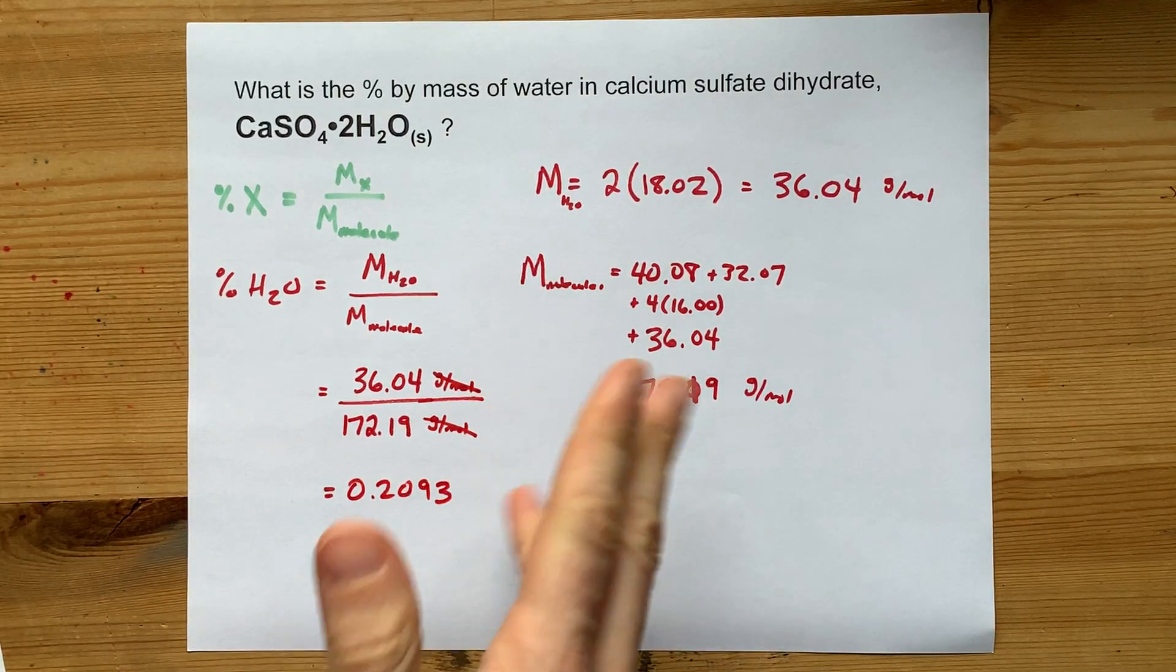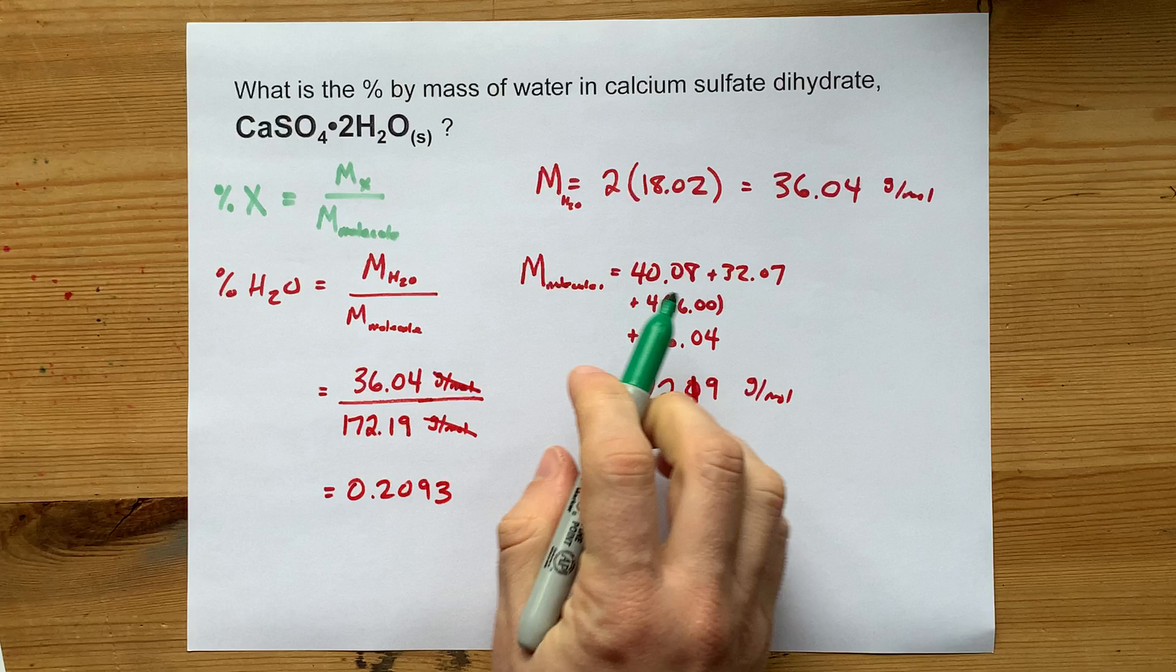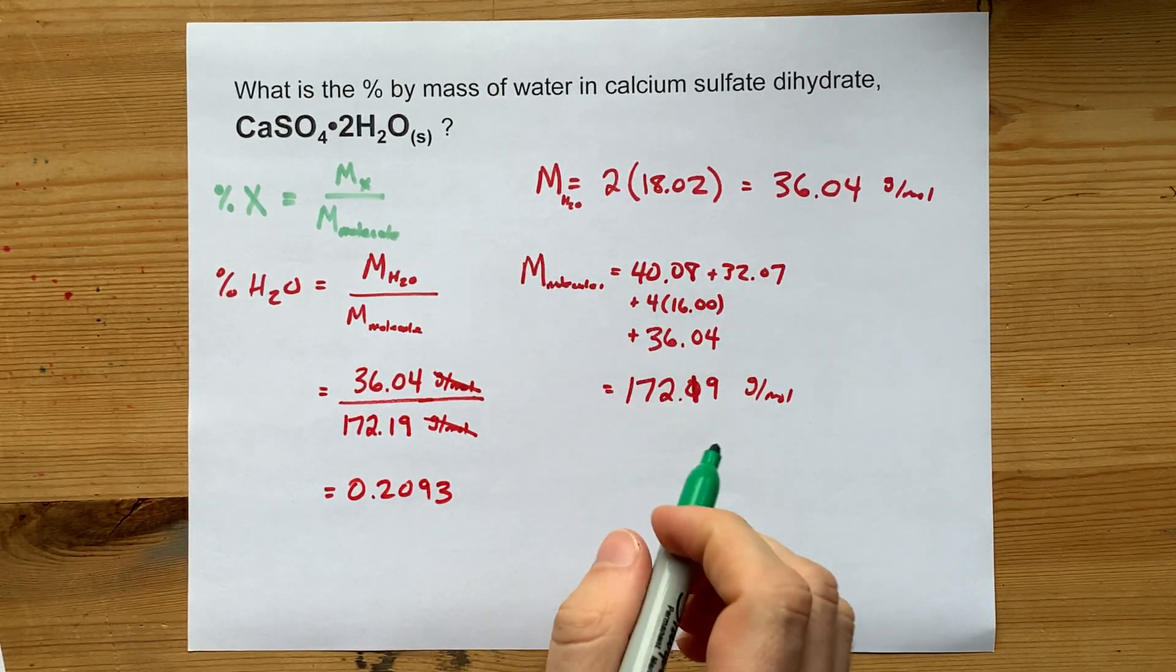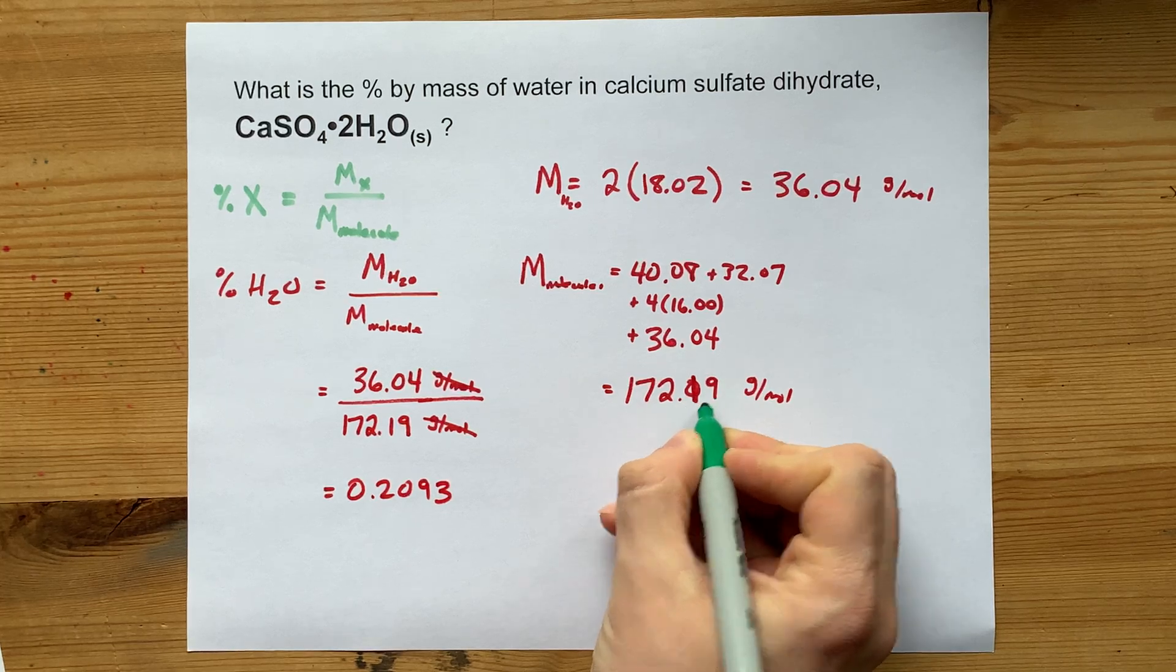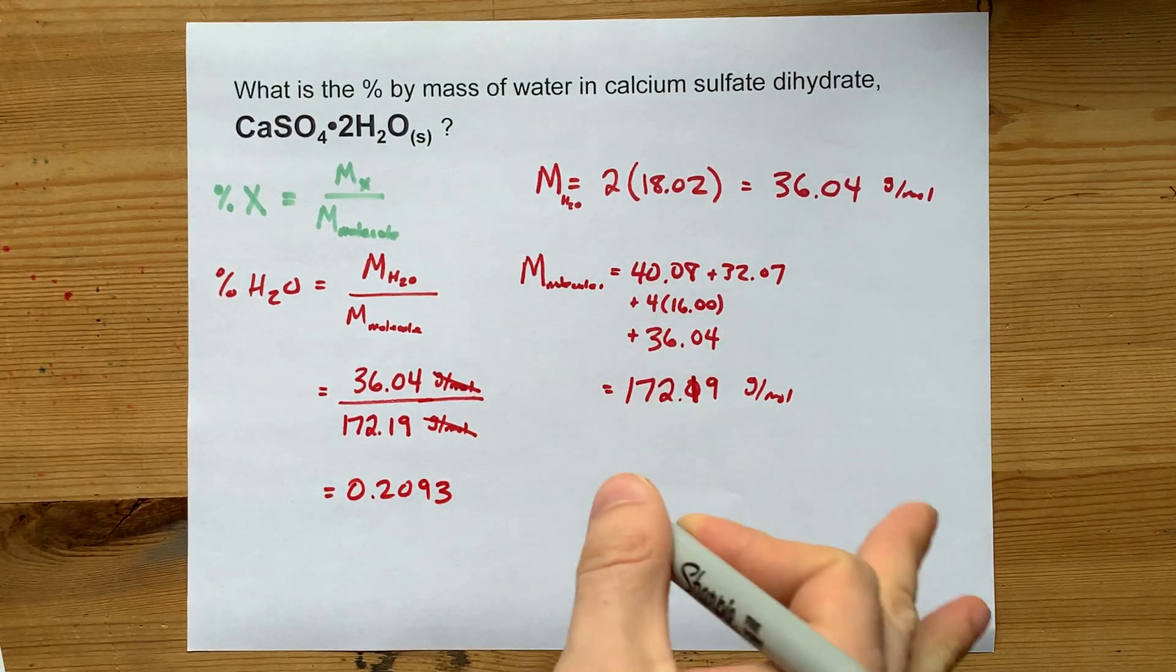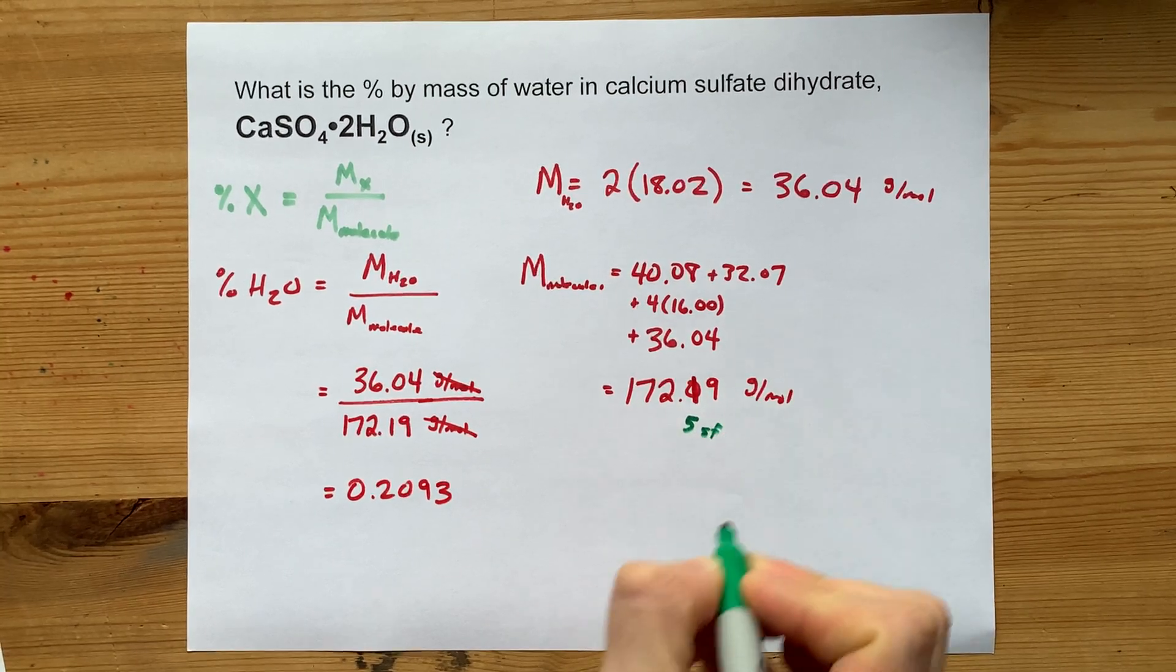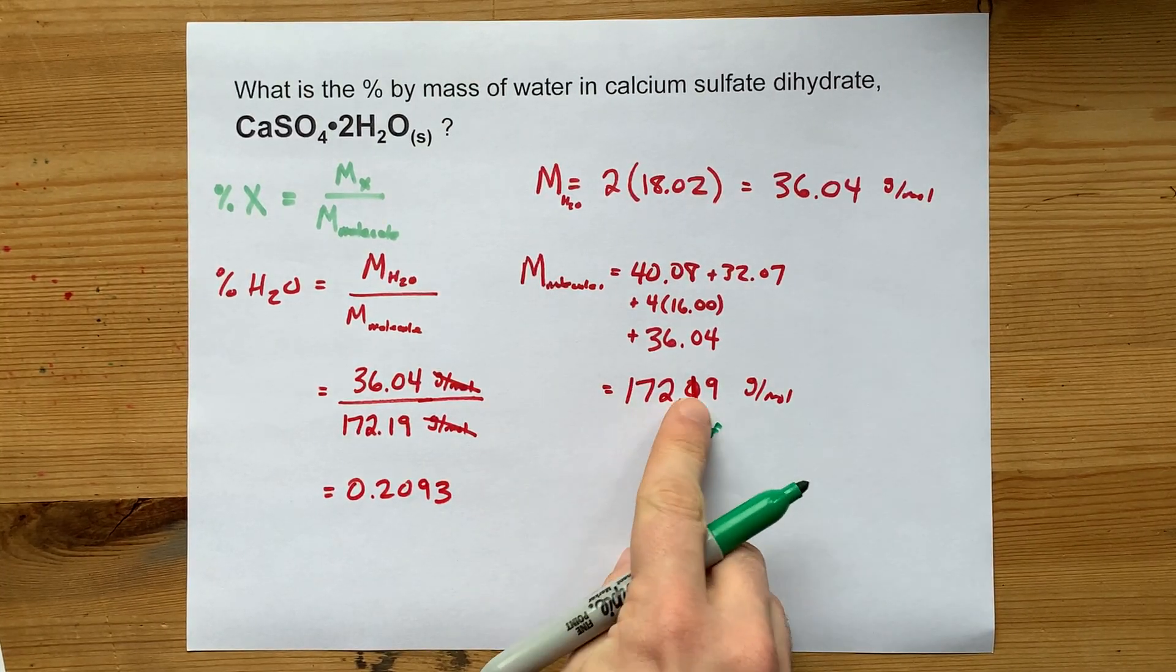Now, I'm going to do some significant figure work. Here, I had two decimal places on all of these. And thus, I need two decimal places on the sum of them. That's one of those obscure significant figure rules. So, this number here has five significant figures. 1, 2, 3, 4, 5.